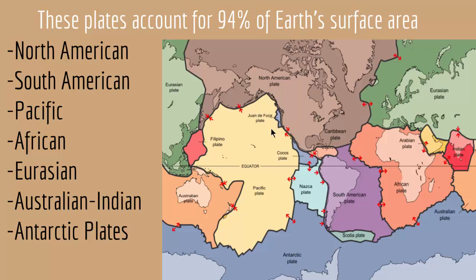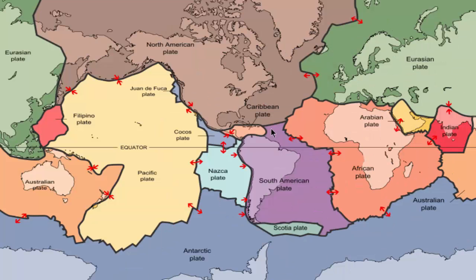In later lectures we'll talk about why these plates are moving, but in this lecture we're focusing on the plates moving. Something very interesting about plate movement happens at the edges. For example, at the edge of the Pacific plate and the North American plate, either the two plates will collide, get away from each other, or travel past each other. These are the interesting things that happen at plate boundaries.